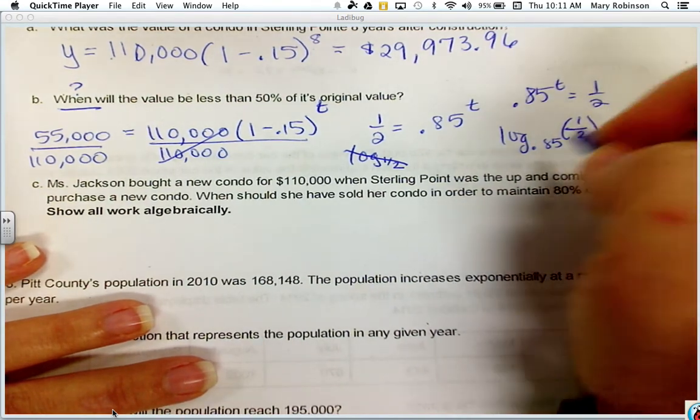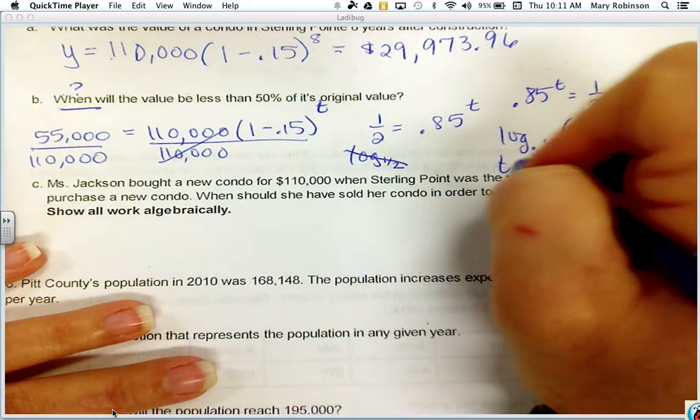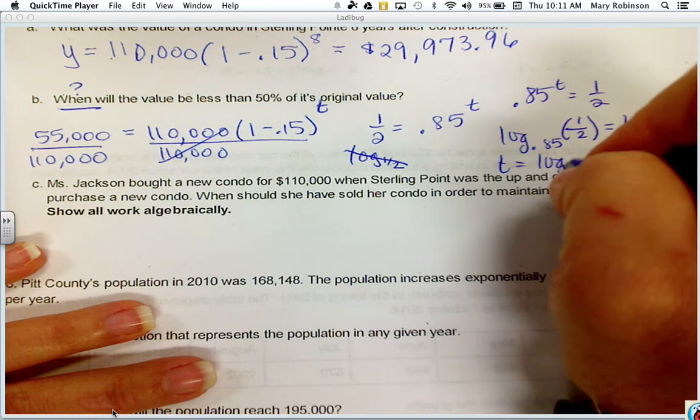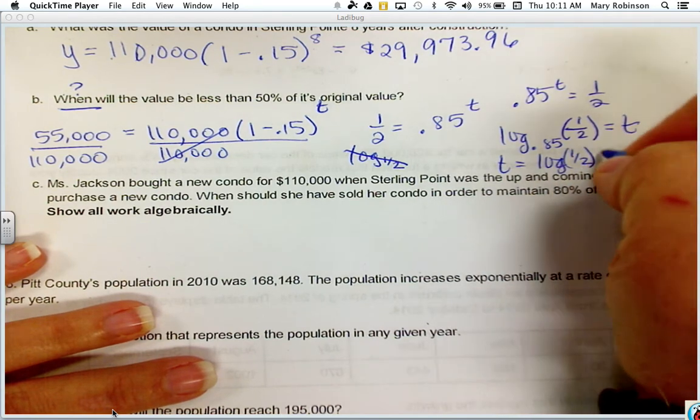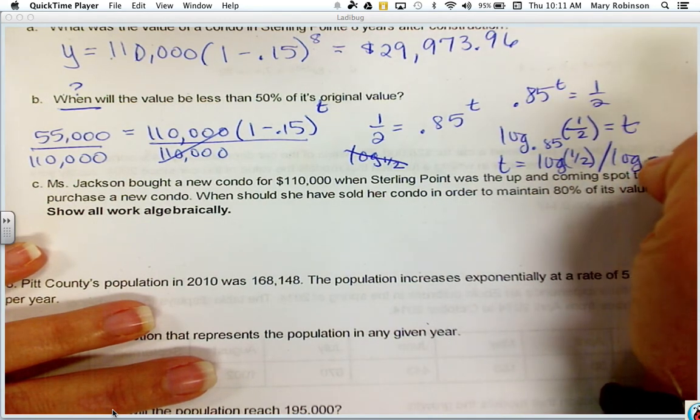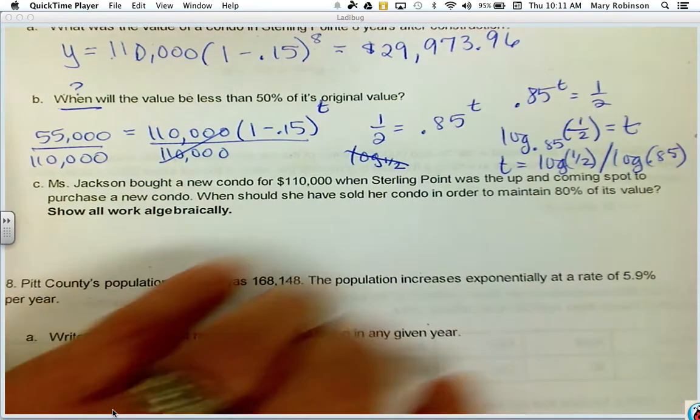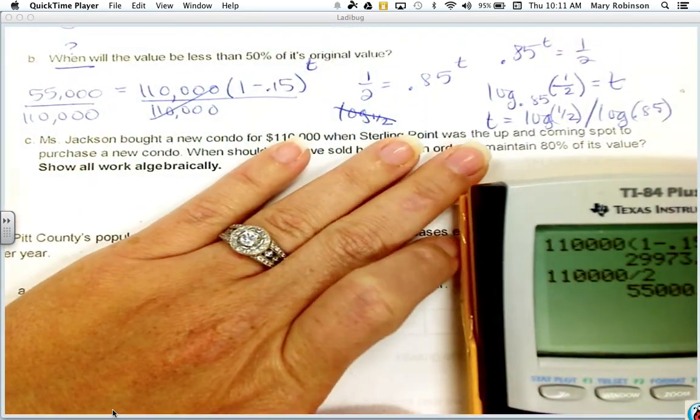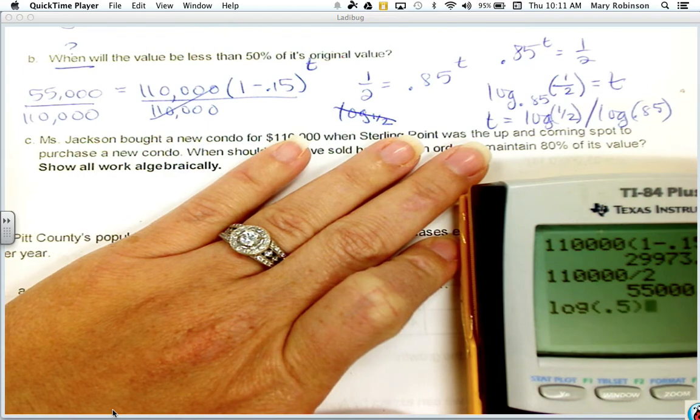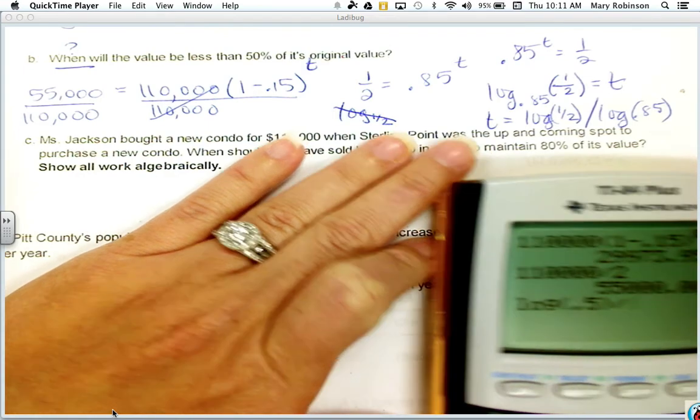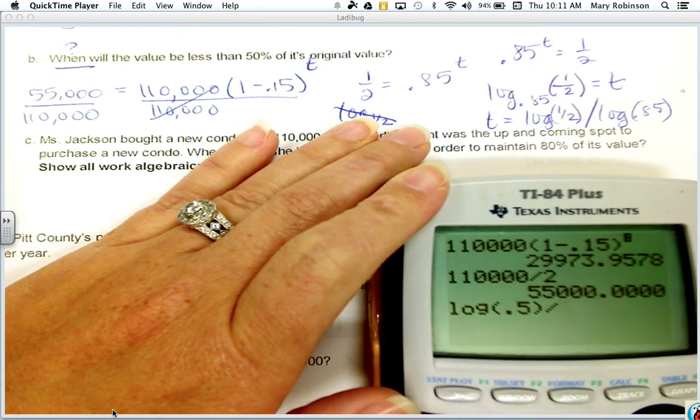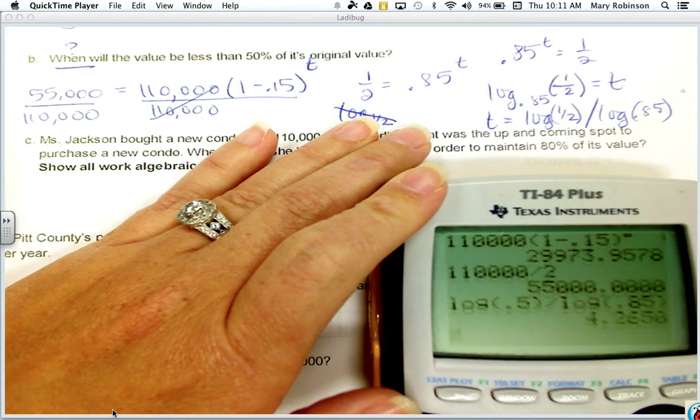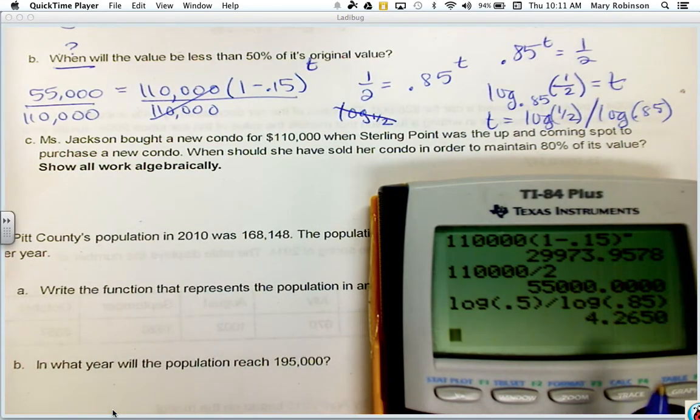And to solve for T, we would need to do change of base. So T is log of 1 half divided by log of the base. Remember, the base always goes on the bottom. And we simply type it in our calculator: log of 1 half divided by log 0.85, and we get 4.2650.